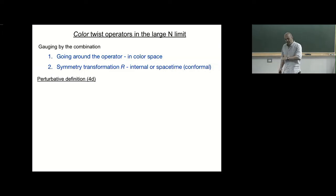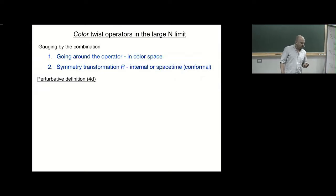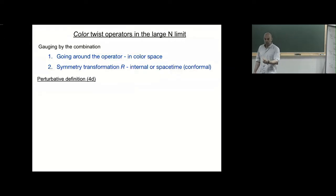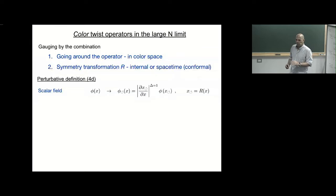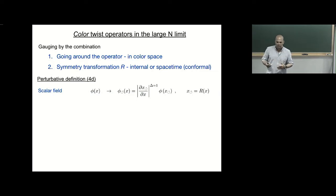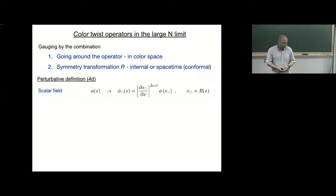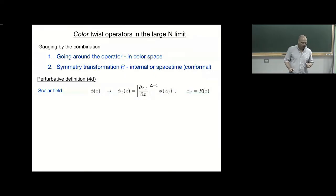What I want to talk about today is a generalization of that, which turned out to be actually related. In our case, the issue of going around, instead of taking place in some two-dimensional space-time, will take place in color space. So I define twist color operators: an operator where when you go around in color space, you apply a symmetry transformation. To define it properly, let's define it in perturbation theory, because this is something people in integrability talked about from the very beginning — how to twist Bethe equations — but it was never connected to actual observables or actual perturbative computations.